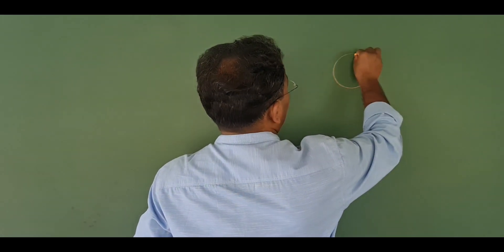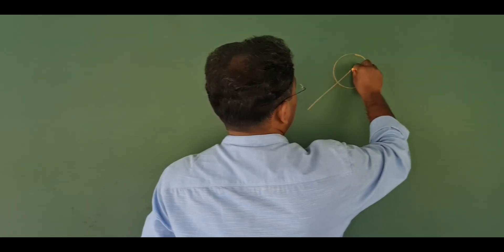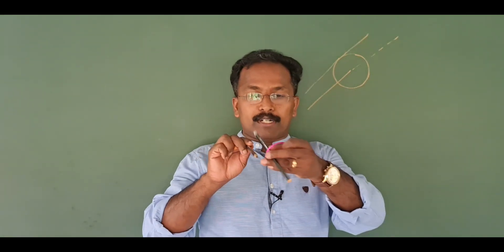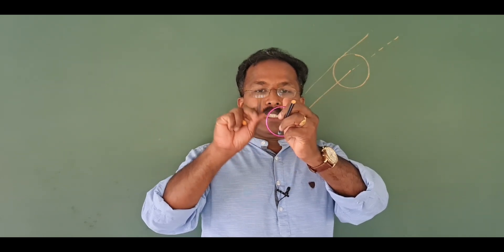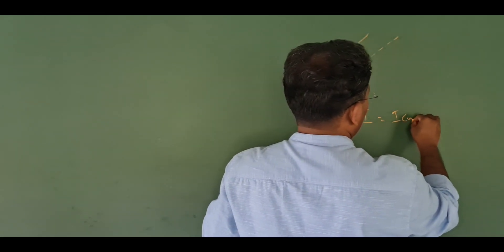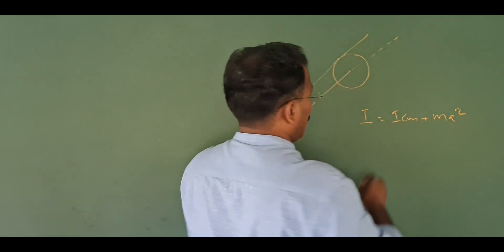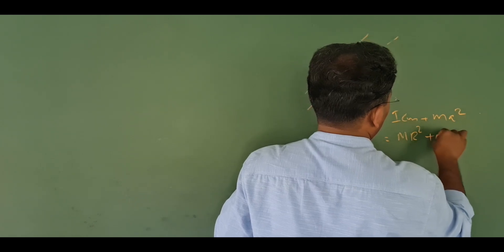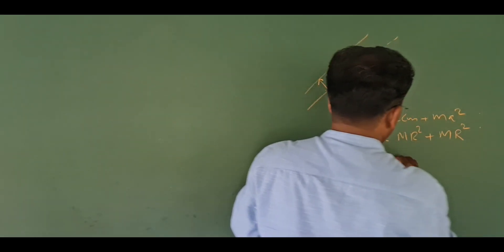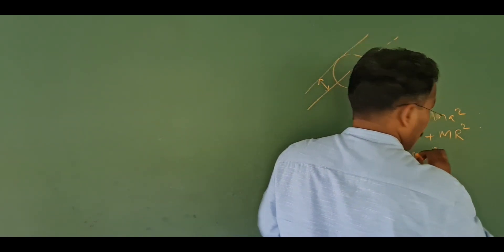We will apply ICM and the parallel axis. For the ring with radius R, the ICM about the center axis is mR squared. Using the parallel axis theorem, I is equal to ICM plus Ma squared, which is mR squared plus m into R squared. That gives us 2mR squared.